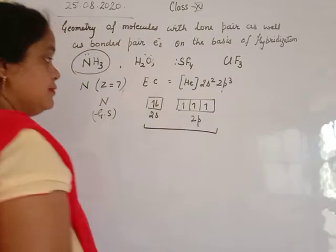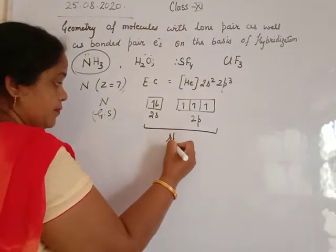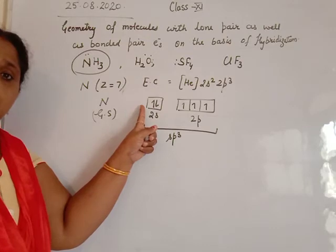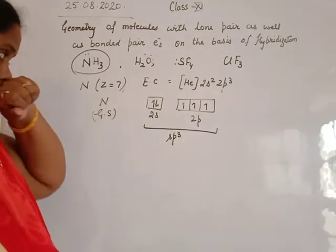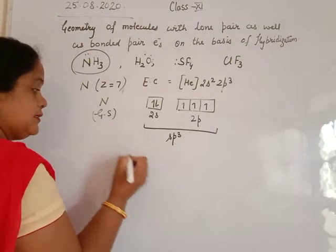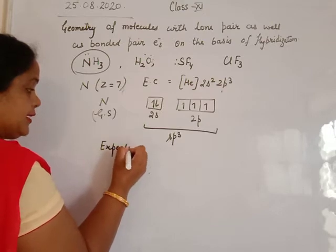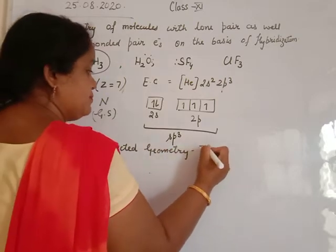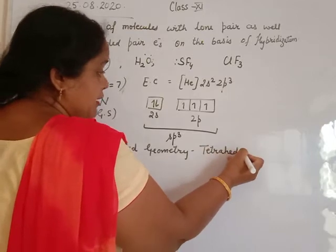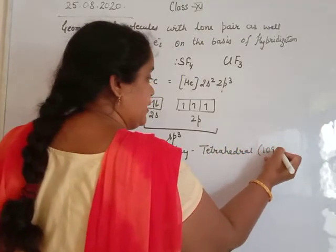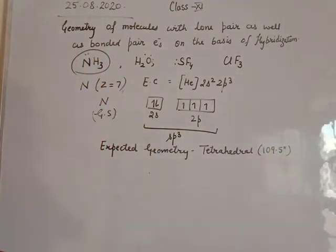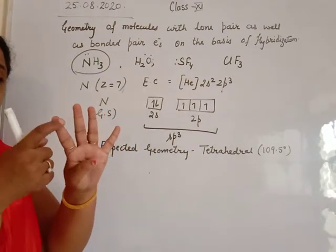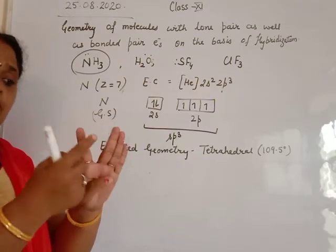The hybridization state is sp3. The 3 electrons are involved in bond formation and the s electrons remain as a lone pair. On the basis of sp3 hybridization, the expected geometry is tetrahedral with a bond angle of 109.5 degrees. But the actual geometry differs from the expected geometry, because in ammonia there are 3 bonds (3 hydrogens) and 1 lone pair.